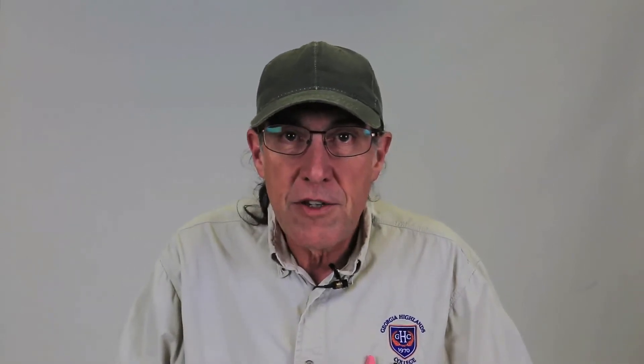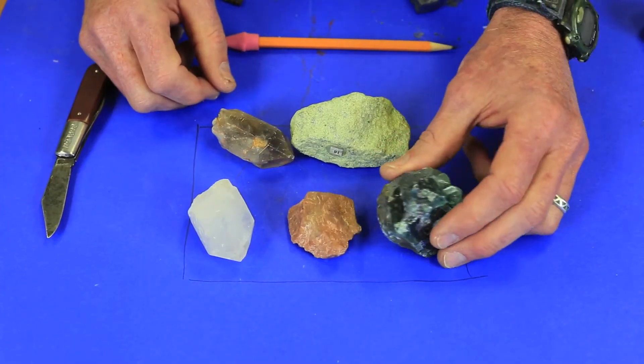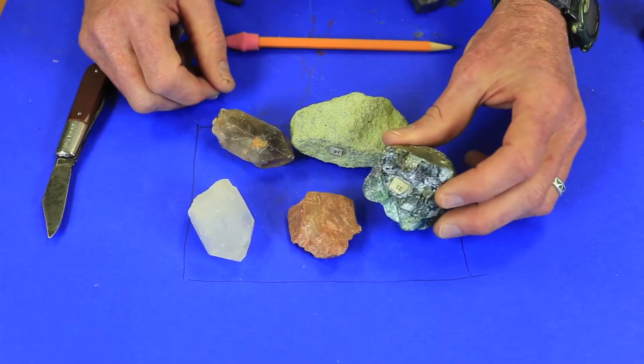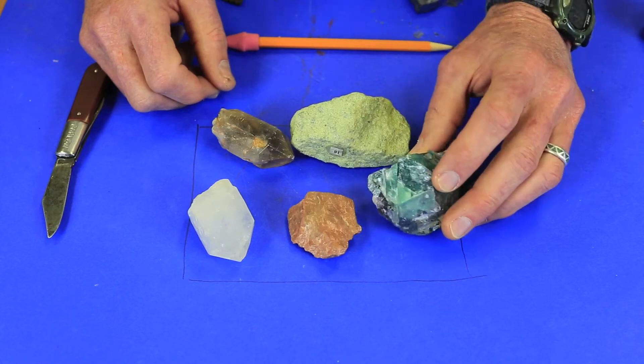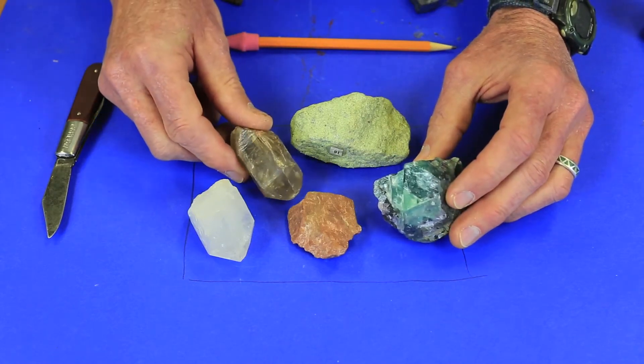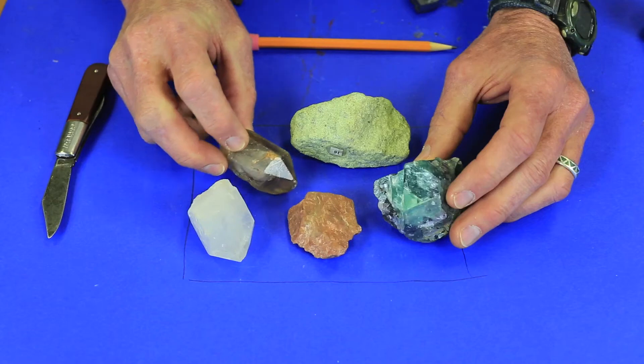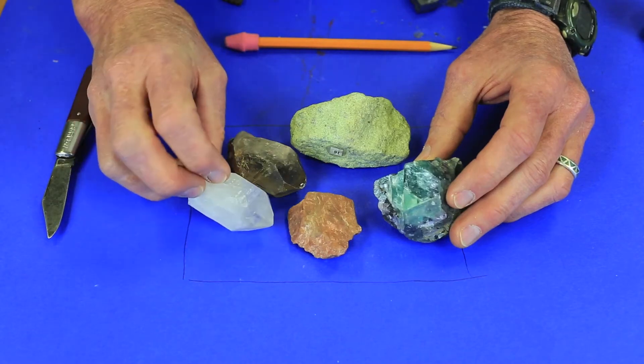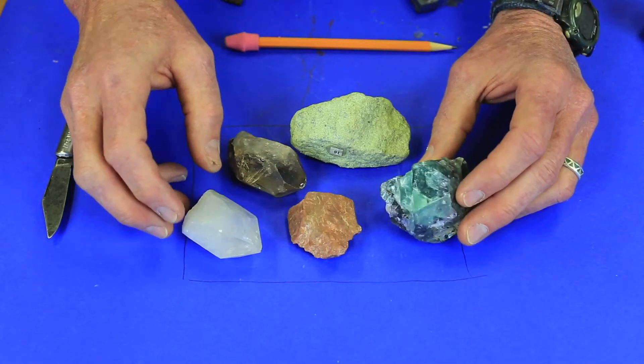Now there are several physical properties that are important for you to test for using these tools. The number one property that we want to talk about first is color, because color is the least reliable of all of the physical properties. Just a few rogue atoms in the mineral chemistry can produce drastic differences in color, so you should never let color be the final determining factor in naming your mineral—there's just too much variation.